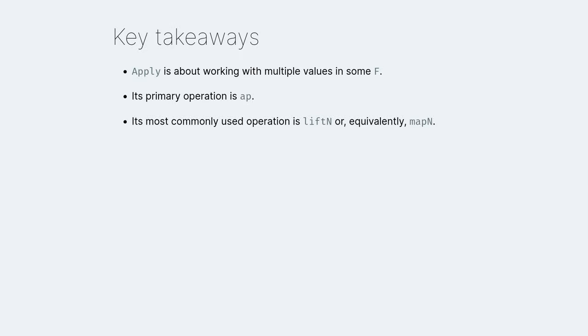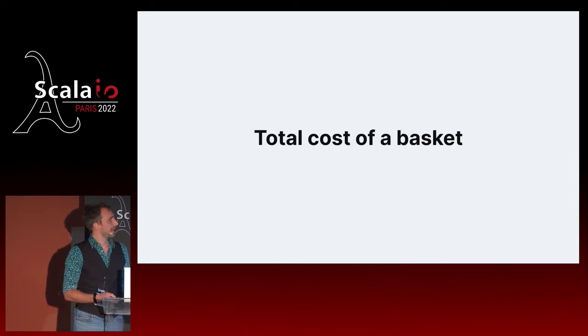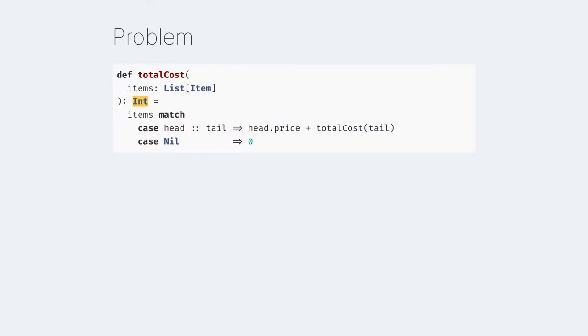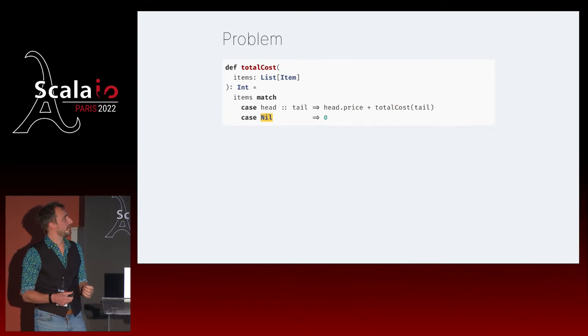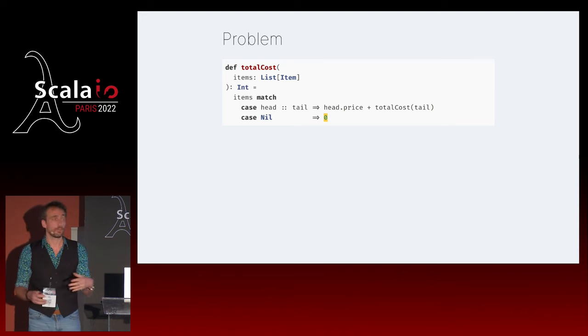At this point we know how to find affordable items and, given multiple items, how to take the cheapest. Now we want to put all items in a basket and know the total cost before pressing buy. The implementation is again fairly straightforward: total cost takes a list of items and returns their price. List is a recursive data type, so we use natural recursion. In the non-empty case, we sum the head's price to the price of the tail; in the empty case, the empty basket has a cost of zero. Sometimes we call it a fold, but it's the same thing.